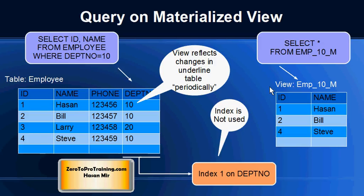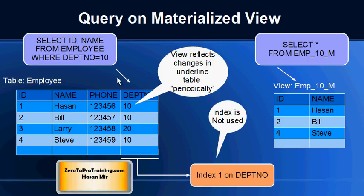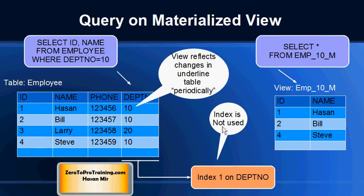In case of a materialized view you can do the same query that we did in case of the view. But now there is a difference — when you do this query on the materialized view, the underlying query is not run by the database management system. The underlying query is only run once when the materialized view was created, and it will be run again when it is refreshed, but not every time you query the materialized view. This results in a tremendous performance advantage. Indexes on the base table are obviously not being used when you are hitting the materialized view.